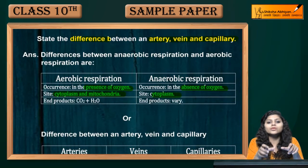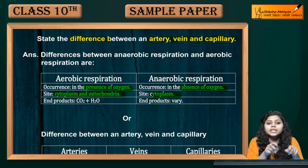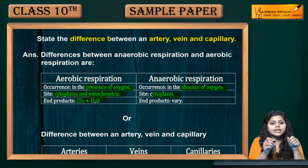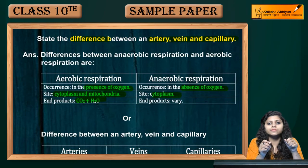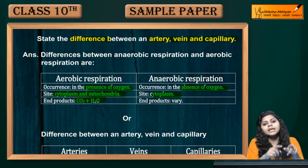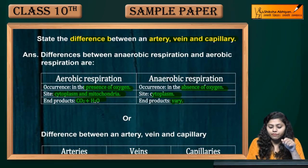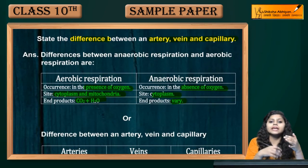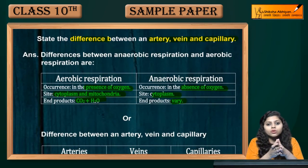Now we will talk about the end products. In aerobic respiration, the end products are carbon dioxide and water. In anaerobic respiration, if lactic acid is produced it becomes lactic acid, and if alcohol is produced it becomes ethanol.